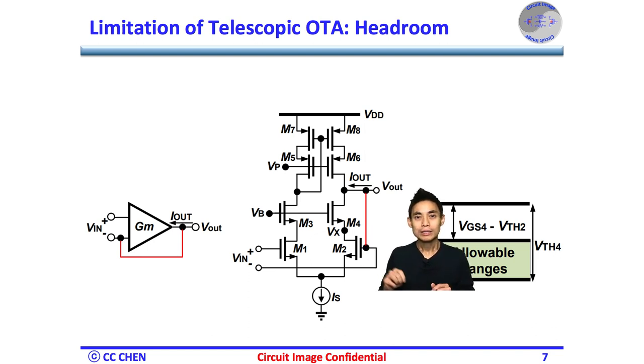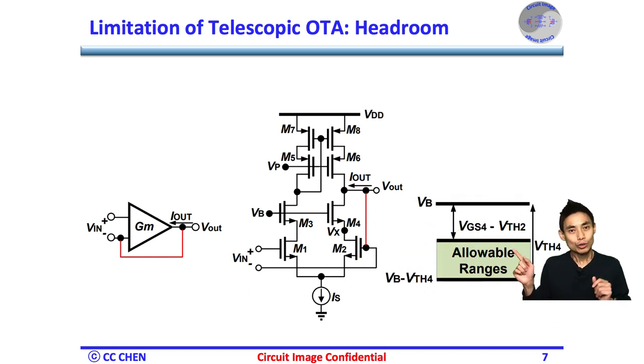Second, for M4, the VR must be greater than the gate bias VB at the gate of M4 minus one threshold voltage VTH4 to keep M4 in the saturation region. Third, the VX should be VB minus VGS4. To be clear, the headroom diagrams show you the final allowable swing range is less than a threshold voltage, which is too little to make the OTA useful in most applications.